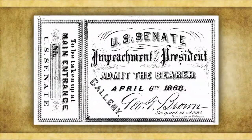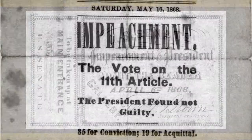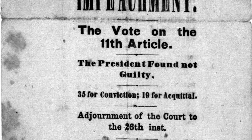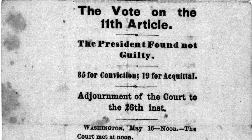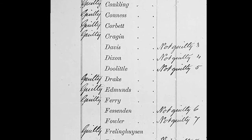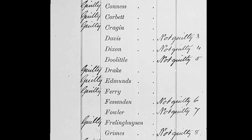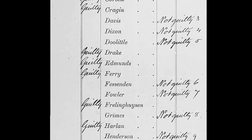The trial ended with a final vote on May 16. It came to 35 voting for guilty and 19 for innocent — they were only one vote short of securing a conviction. All the Democrats voted with Johnson, and seven Republicans broke with their party to vote for him. One reason they did this was to stop Benjamin Wade from becoming president. He was president pro temp of the Senate at the time and was next in line for the presidency. They preferred Johnson to Wade, although they also believed the president was guilty.